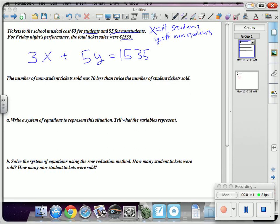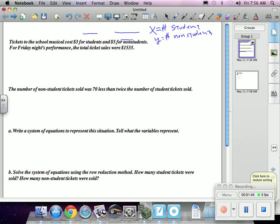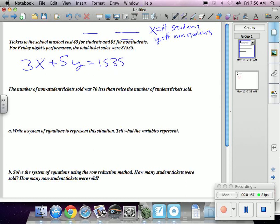Let's write that again. So three per student plus five per non-student is going to give me $1,535.